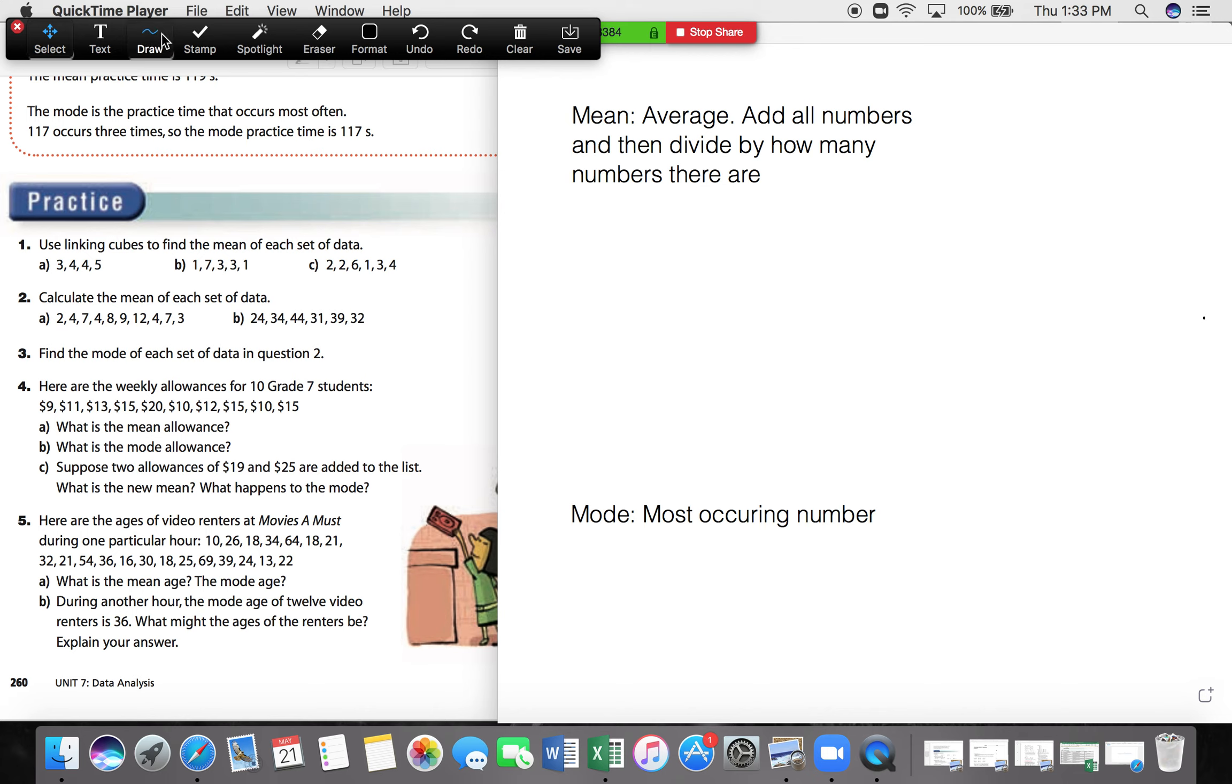Adding that all up, we should get, and I'll draw that over here, we should get 130. So our total amount from our data is 130. The second step is to divide that by how many numbers there are. How many students were surveyed? So we divide that by the 10 students.